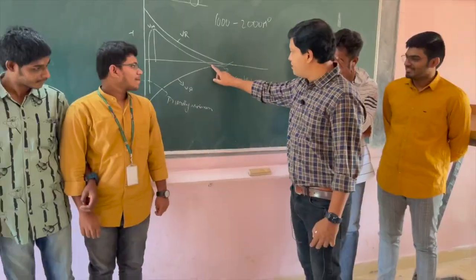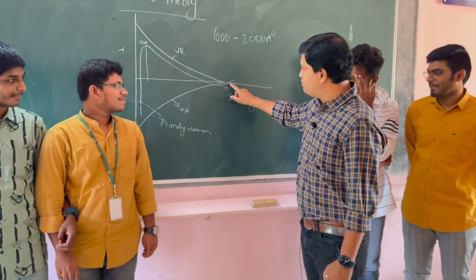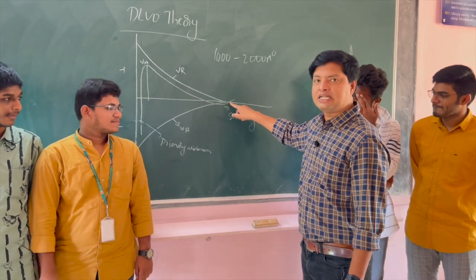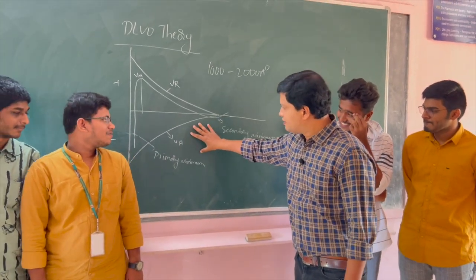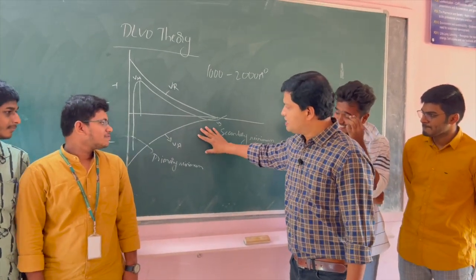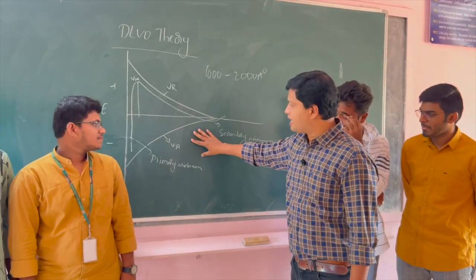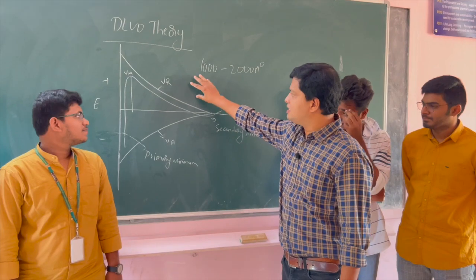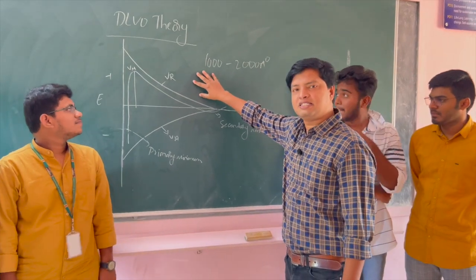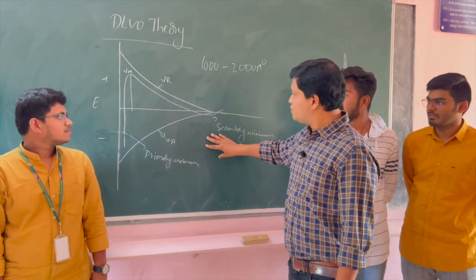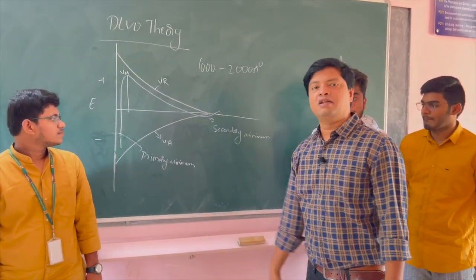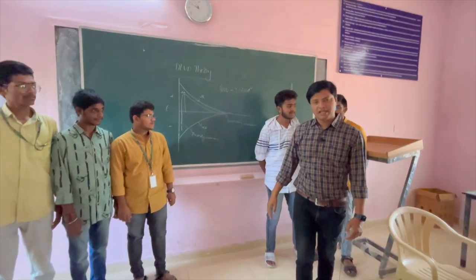That is represented by secondary minimum. This region indicates attraction potential and this region indicates repulsion potential. This is what DLVO theory is. Thank you.